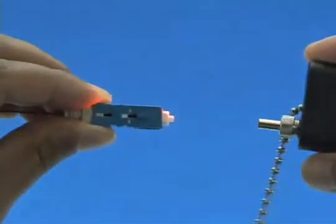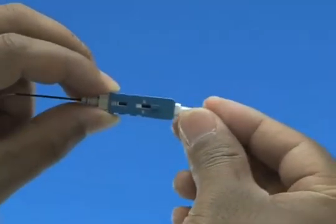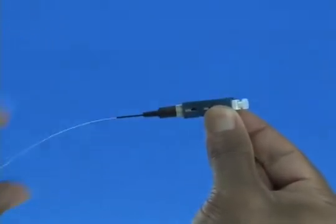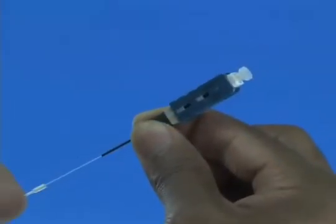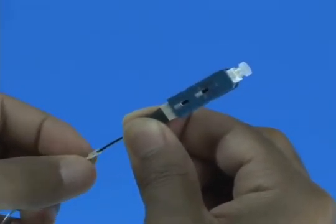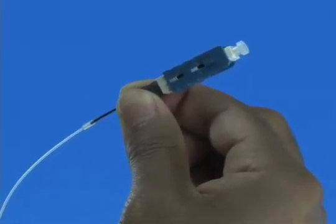Remove the VFI from the connector. Place the dust cap back onto the connector. Slide the 900 micron boot onto the connector. Slide the clear protective tube toward the connector and attach it to the 250 micron protective tube. Termination is now complete.